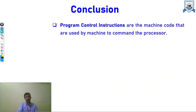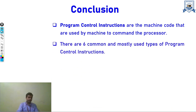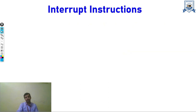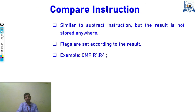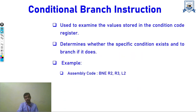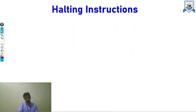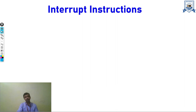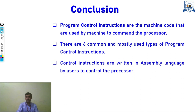In conclusion, program control instructions are machine codes or assembly instructions used by the machine and given by the user to command the processor. There are six commonly used program control instructions: compare instructions, unconditional branch, conditional branch, subroutines, halting instructions, and interrupt instructions. These are written in assembly language so that the processor may be compatible with these program instructions.